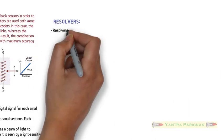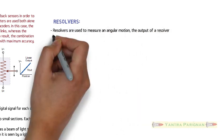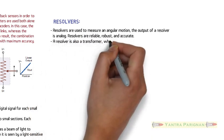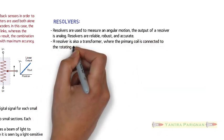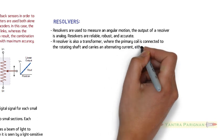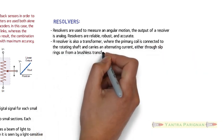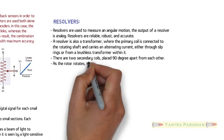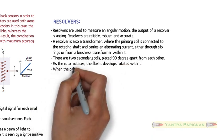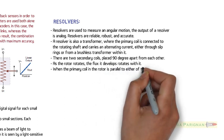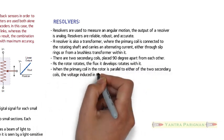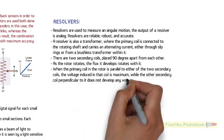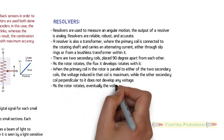Resolvers. Resolvers are used to measure angular motion. The output of a resolver is analog. Resolvers are reliable, robust, and accurate. A resolver is also a transformer, where the primary coil is connected to the rotating shaft and carries an alternating current, either through slip rings or from a brushless transformer within it. There are two secondary coils, placed ninety degrees apart from each other. As the rotor rotates, the flux develops and rotates with it. When the primary coil in the rotor is parallel to either of the two secondary coils, the voltage induced in that coil is maximum, while the other secondary coil perpendicular to it does not develop any voltage.